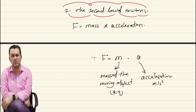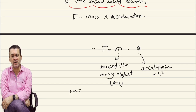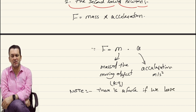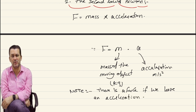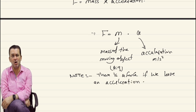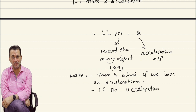Keep in mind: mass is measured in SI units as kilograms, and acceleration is measured in SI units as meters per second squared. So the measuring unit for force in SI is kilogram·meter per second squared, or alternatively we say Newton. When we study the second law of Newton, keep in mind there is a force if we have an acceleration, and there is no force if there is no acceleration.